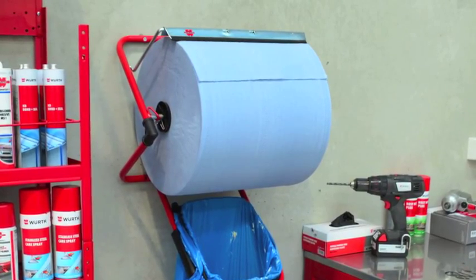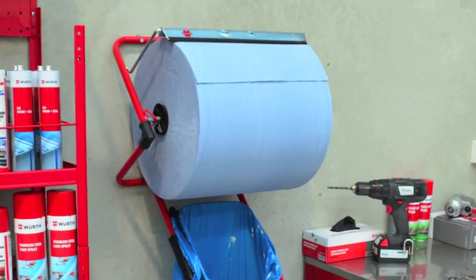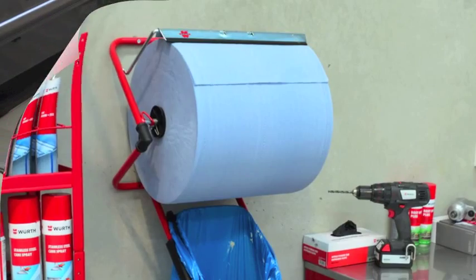With the Worth Paper Towel Roll being 380m long, it provides a massive 1000 sheets.